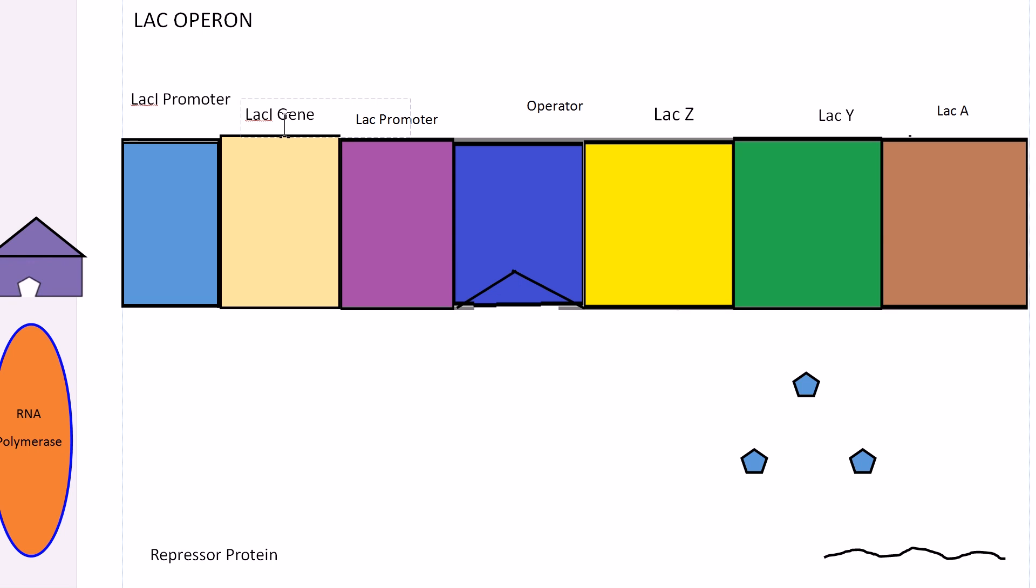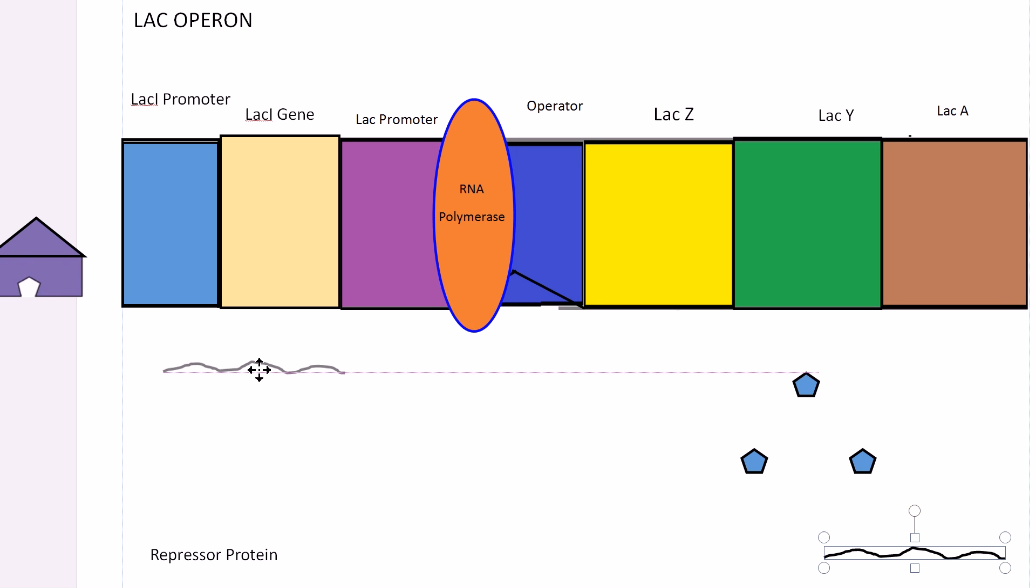The lac I promoter is an area along the DNA where RNA polymerase can grab on and transcribe the lac I gene, making mRNA which codes for the lac repressor protein shown right here.